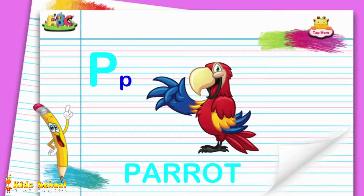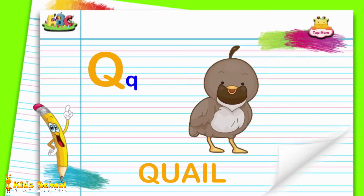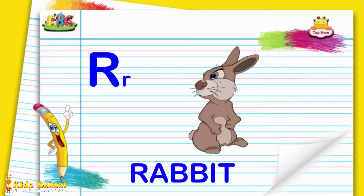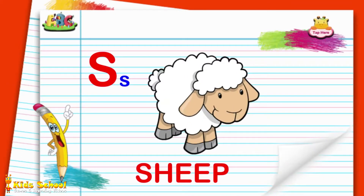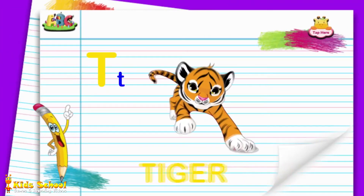P - Parrot. Q - Quail. R - Rabbit. S - Sheep. T - Tiger.